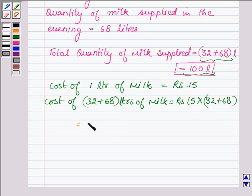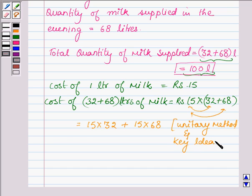Which is equal to first multiplying 15 with 32 and then multiplying 15 with 68 and then adding. So, 15×32 + 15×68 and this is by unitary method and the distributive law of multiplication which is our key idea. And, on multiplying 15 with 32 we get 480 and on multiplying 15 with 68 we get 1020 and the sum of these two numbers is 1500.